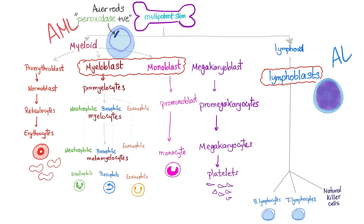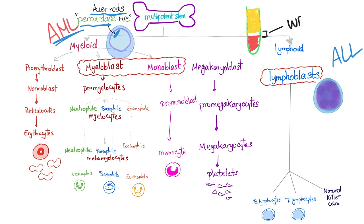One thing to remember: acute myelogenous leukemia has azurophilic granules known as Auer rods. These are peroxidase positive. How to remember that they are myeloperoxidase positive? When we have a test tube of centrifuged blood, we have red blood cells at the bottom, plasma at the top, and in the middle a tiny area called the buffy coat where we have white blood cells and platelets. That white area can sometimes appear greenish because neutrophils produce myeloperoxidase — and the Auer rods are myeloperoxidase positive.